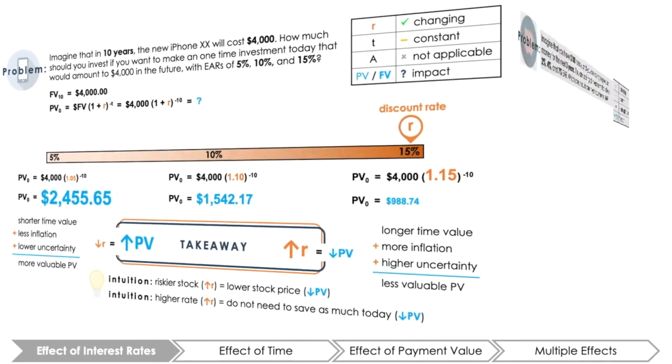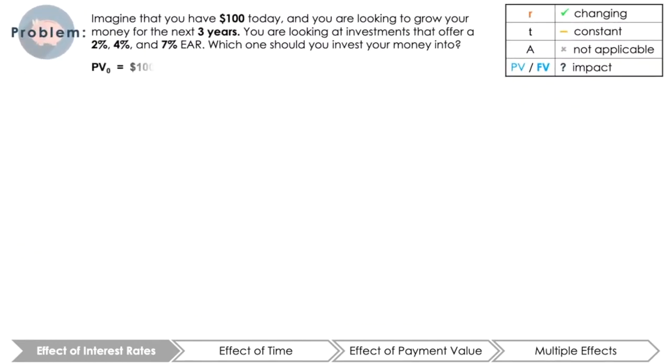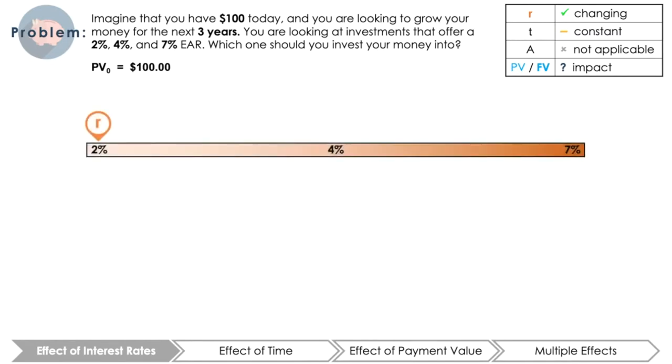Let's see a more explicit example of this. Imagine you have $100 today that you have worked hard to save. You are looking now to invest this money into an investment vehicle to grow your money for the next three years. You are looking at short-term investments that offer a 2%, 4%, and 7% effective annual rate. Which one should you invest your money into? Pause here and calculate the FV of your $100 investment three years from now.